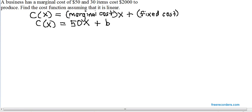So to find b, we use the only information of the problem we haven't used yet. And that is, when 30 items are produced, remember x is the number of items produced, the total cost is $2,000.